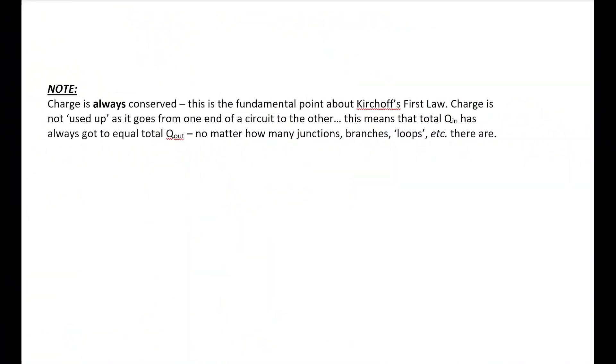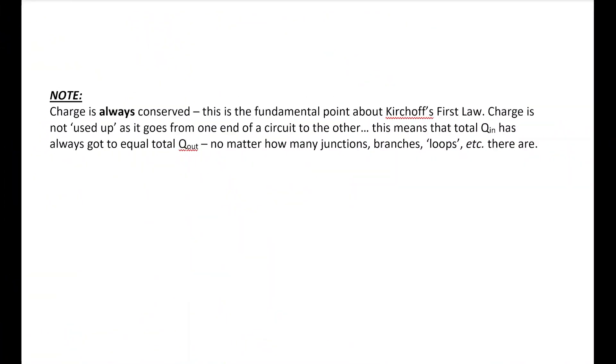What we just witnessed happening in that circuit is what is called Kirchhoff's first law. What I just said, that current is the same at all points on a series circuit and divides at junctions in a parallel circuit. And the fact that charge is always conserved is a fundamental part about Kirchhoff's first law. It's the charge that's conserved. So what goes in to a circuit has to come out the other side. It doesn't matter how many junctions or branches or loops that you have. The total has to be the same going into the battery as came out.